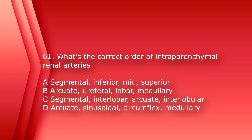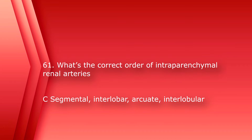Number 61: What's the correct order of the intraparenchymal renal arteries? A) segmental, inferior, mid, superior; B) arcuate, ureteral, lobar, medullary; C) segmental, interlobar, arcuate, interlobular; or D) arcuate, sinusoidal, circumflex, medullary. The answer is C, segmental, interlobar, arcuate, interlobular.